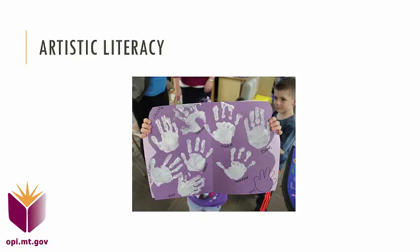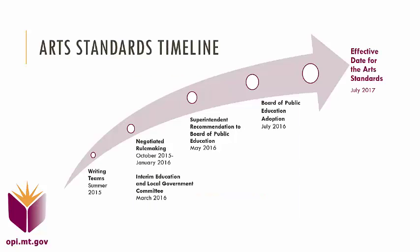Montana's new arts content standards were created by and for Montana educators. Writing teams met in 2015 to draft the standards. That draft then went on to a separate committee of educators, parents, and taxpayers for review. Schools weighed in on the financial impact of implementing the new standards. Following the recommendation of Superintendent Denise Juneau, the Board of Public Education officially adopted the new standards in July 2016.